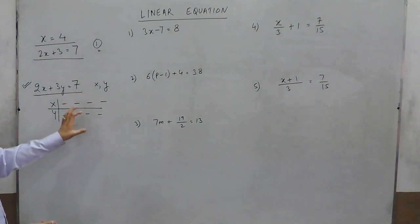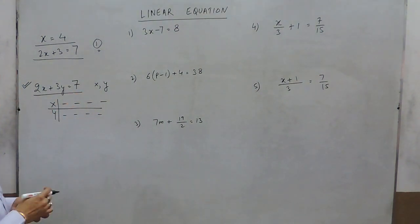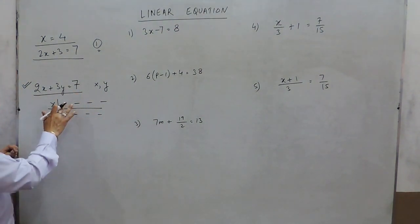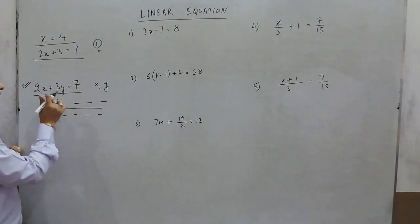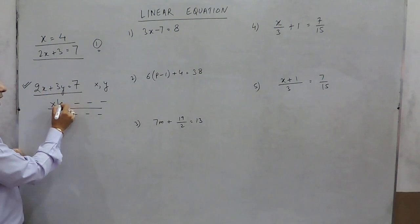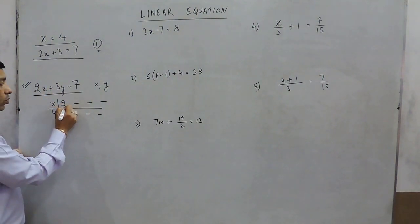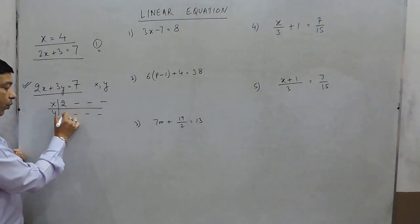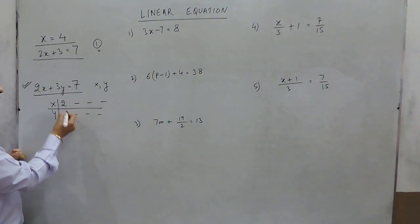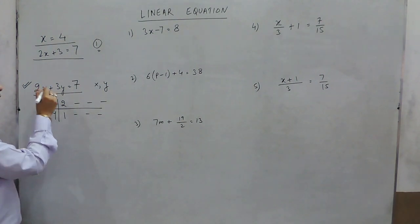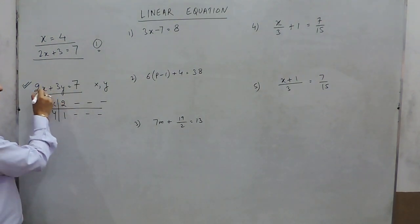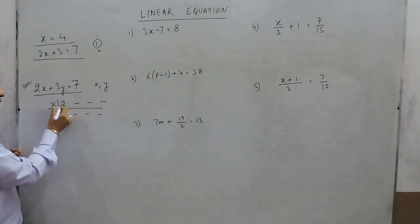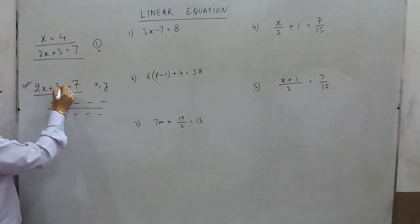For example, if the value of x is 2 then the value of y is 1 — meaning if we substitute x equals 2 and y equals 1, this satisfies the equation.